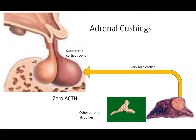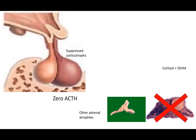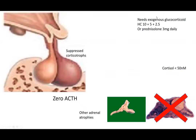This atrophy may be going on for months or years as the patient gets slowly more Cushingoid. Even a slightly elevated cortisol will suppress the axis before the patient presents. Then one day you diagnose them, find the tumor, and remove it. The next day the patient will have no cortisol — less than 50 if you measure it — because the corticotrophs are suppressed. Therefore, the patient will need exogenous steroid replacement.